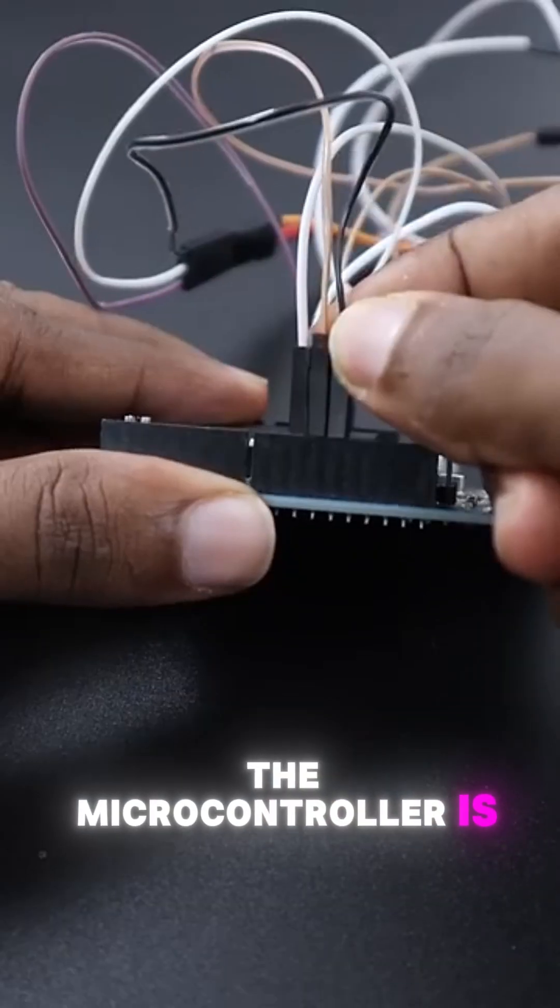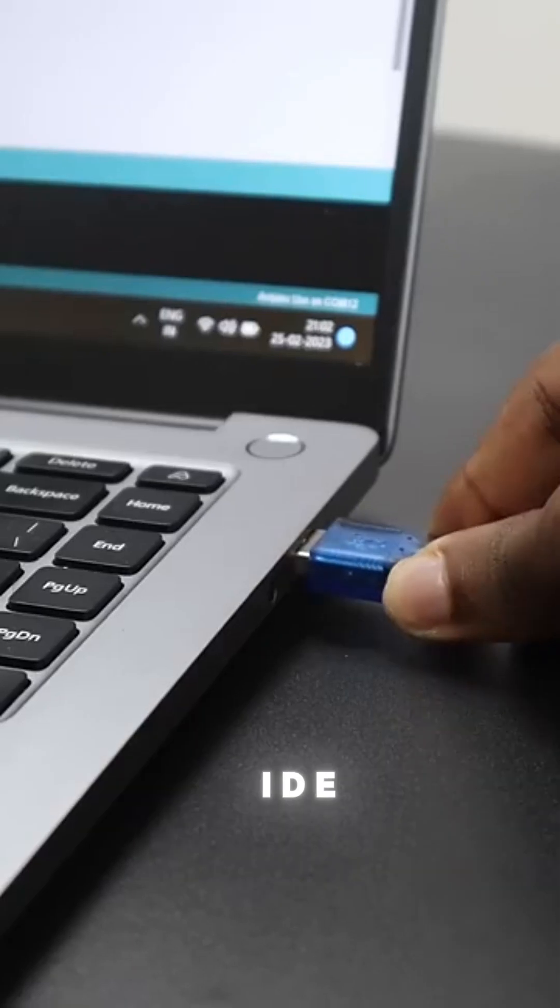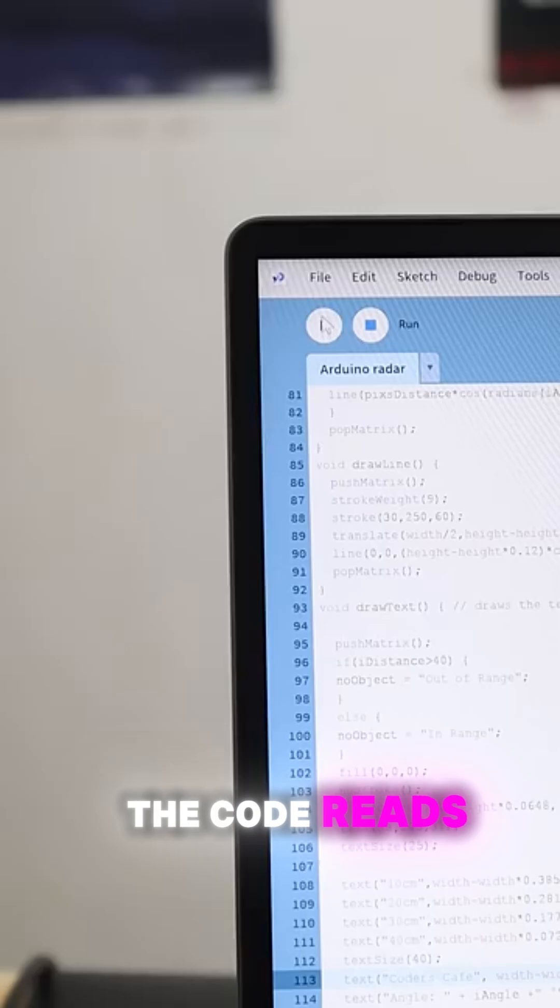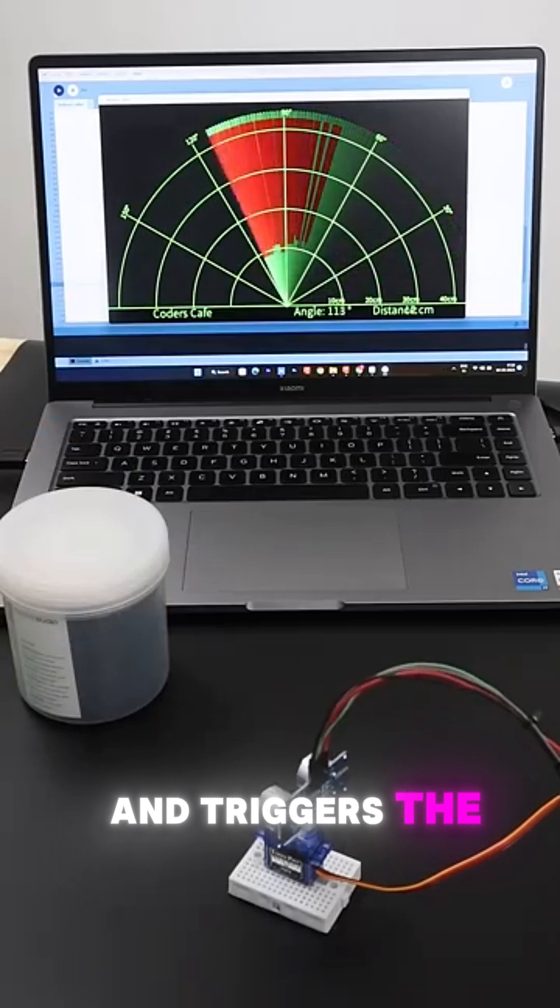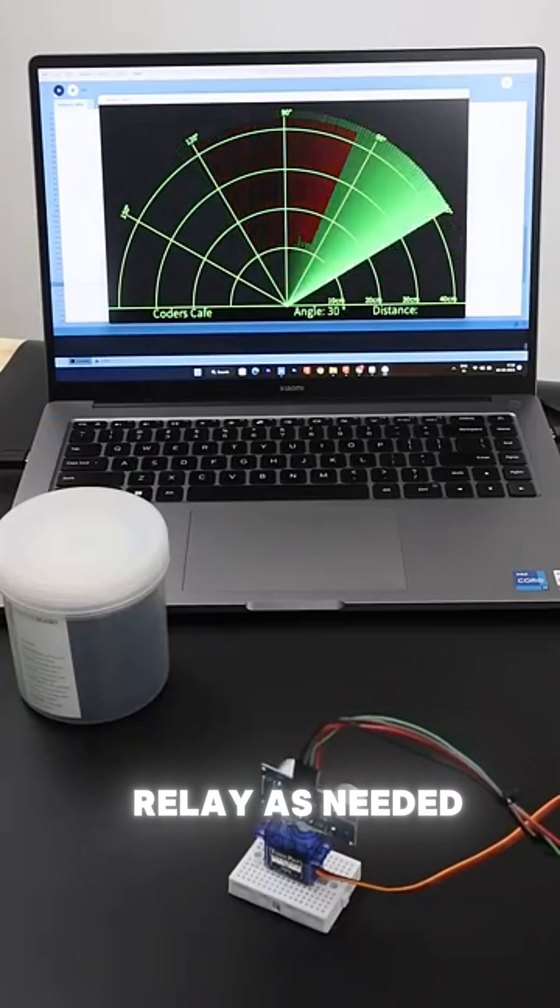The microcontroller is programmed using Arduino IDE. The code reads gas levels, compares them to a threshold, and triggers the buzzer, LEDs, or relay as needed.